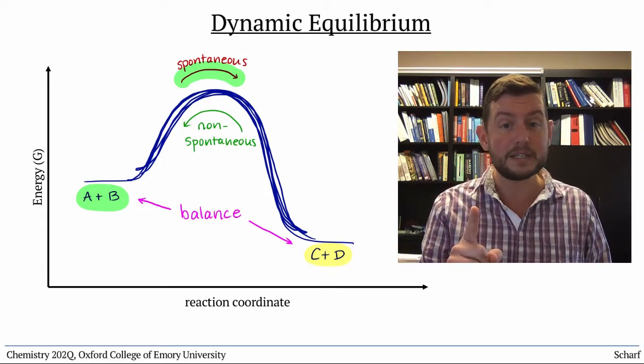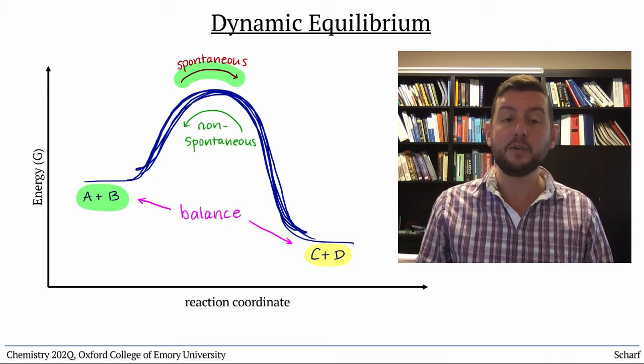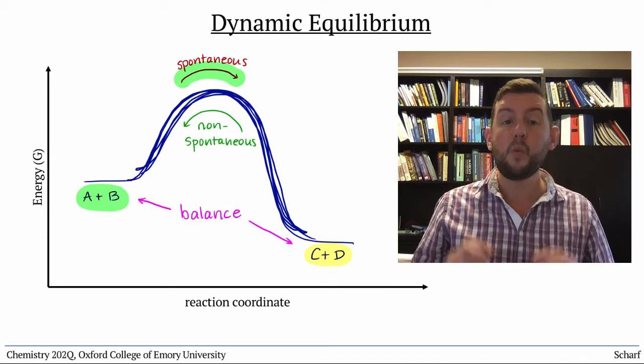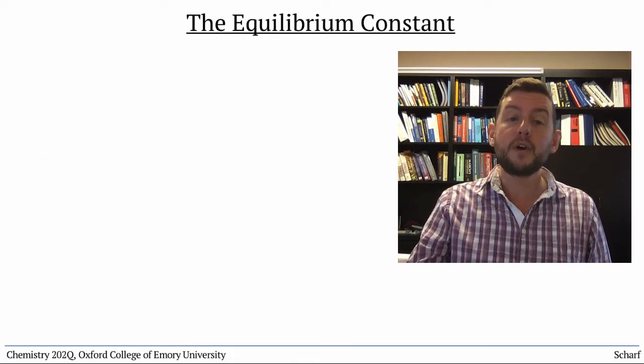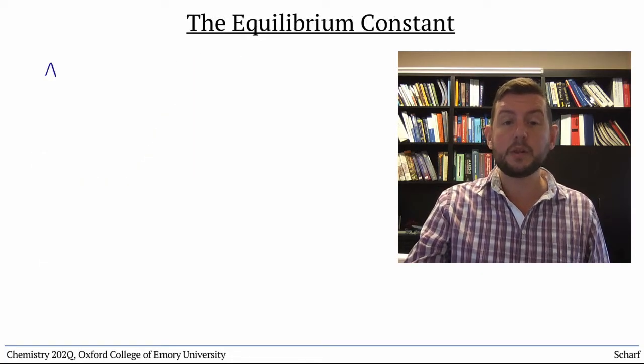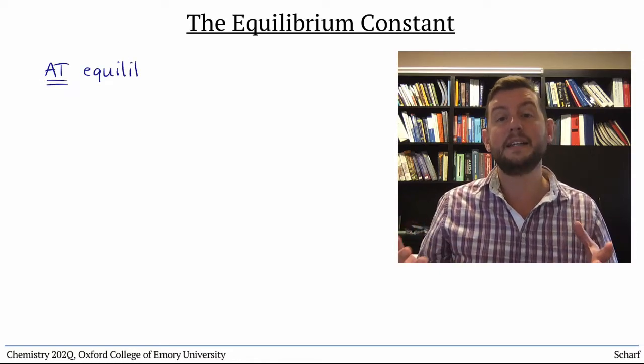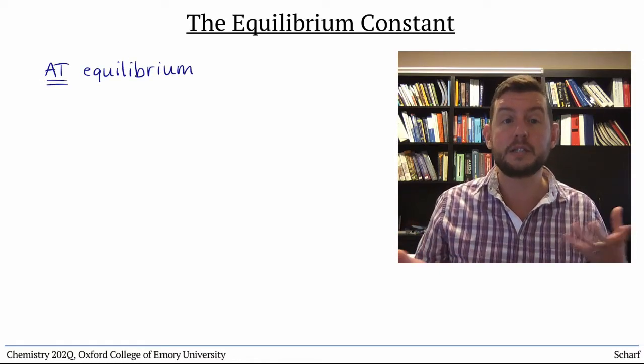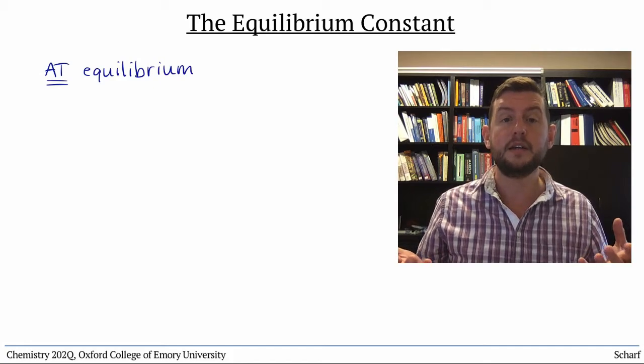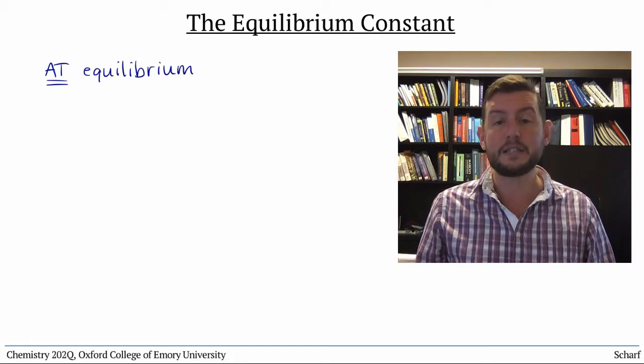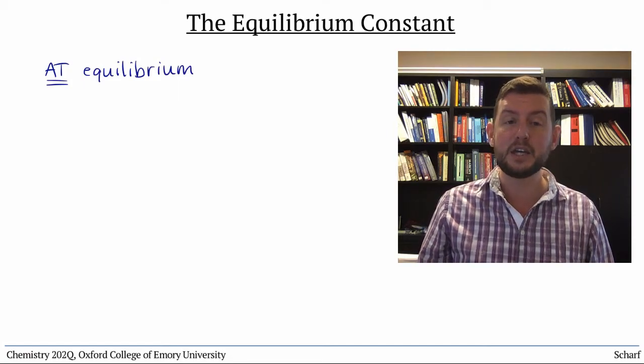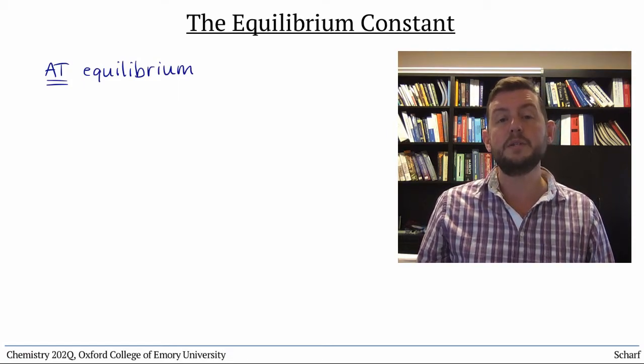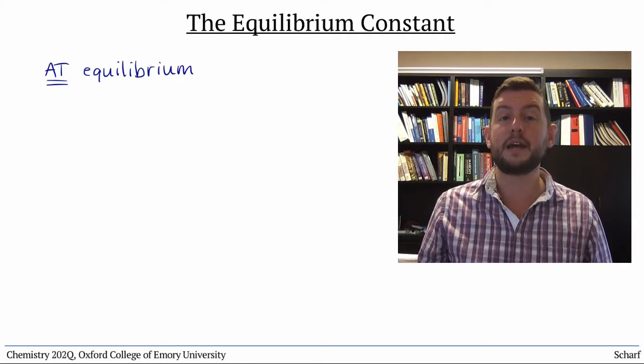And lucky for chemists, there's a particular mathematical relationship that holds once this balance is achieved. For a given reaction at equilibrium, that is, once it's had enough time to reach this balanced state of affairs, there is a numerical constant called the equilibrium constant, KEQ, that describes the ratio of products and reactants.